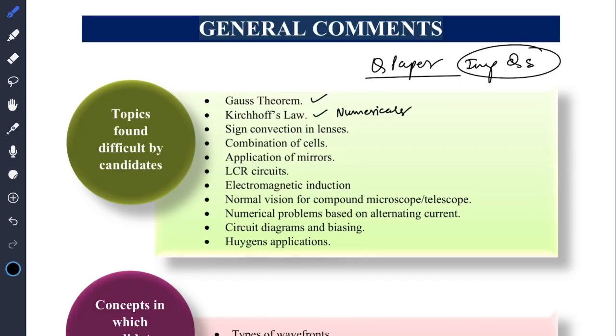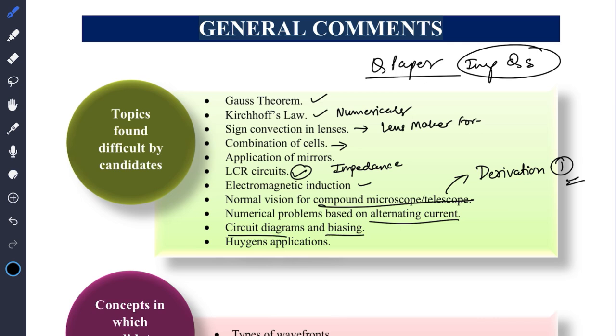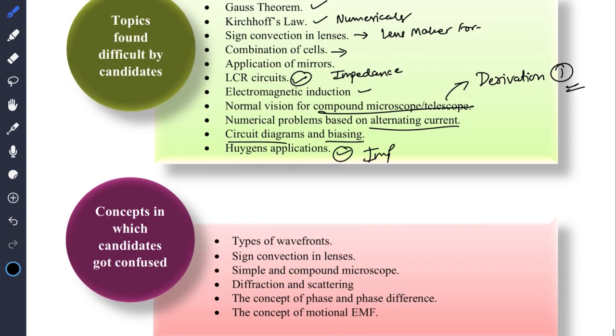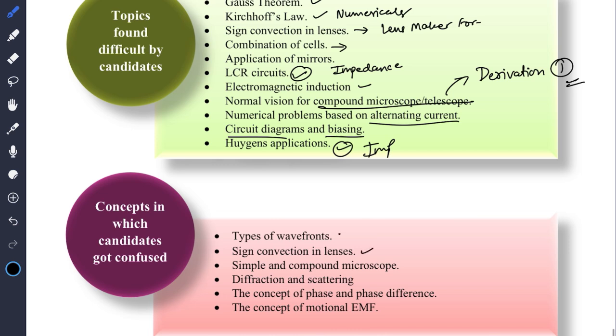Important questions: Gauss theorem, Kirchhoff's law and its numericals, sign convention for lenses, some derivations like lens maker formula, two convex lenses, then combination of lenses, application of mirrors, LCR circuits - calculate the impedance. Then electromagnetic induction, this is also an important one. Compound microscope or telescope - they may ask you the derivation, one derivation will surely come tomorrow. Numerical based on alternating current, circuit diagrams and biasing, Huygens applications - again important. Then wavefront, sign convention and lenses, simple and compound microscope, double slit experiment - this is also important.